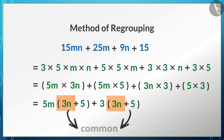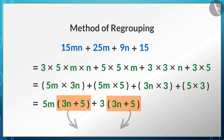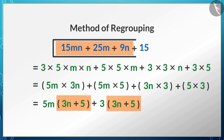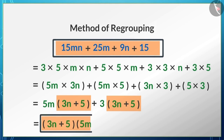Now you can see that (3n + 5) is common, so we write it in the same manner. Hence, the factors of the algebraic expression 15mn + 25m + 9n + 15 are (3n + 5) and (5m + 3). Thus, we have learned to factorize by the regrouping method.